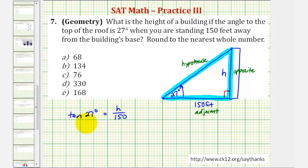And now we can solve this equation for h to determine the height of the building. So to solve for h, we want to clear this fraction by multiplying both sides by 150. Notice on the right side, this simplifies nicely to h, so h is equal to 150 times tangent 27 degrees.